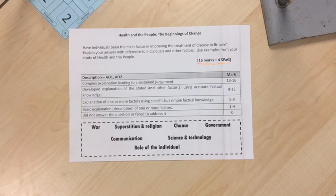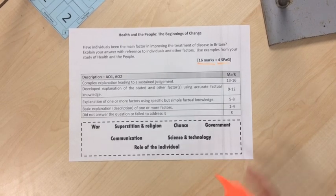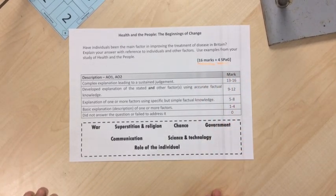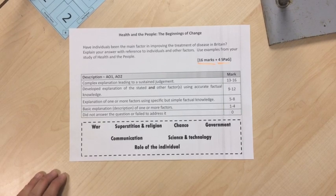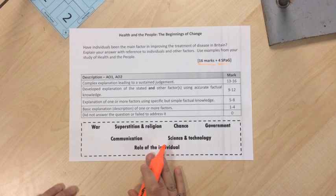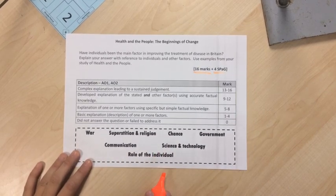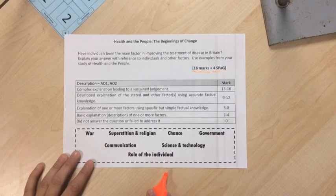Today we are looking at the 16-marker with four marks for SPAG on the Health and the People topic in Paper 2. As it's 20 marks in total, you want to make sure that you're getting this right. I'm going to talk you through the mark scheme very briefly and then show you how I would structure a paragraph. The question is going to be phrased like this: 'Have individuals been the main factor in improving the treatment of disease in Britain?'